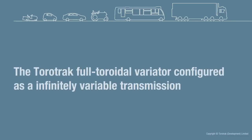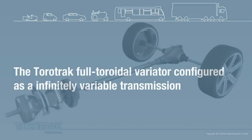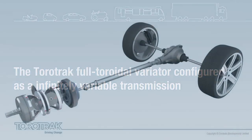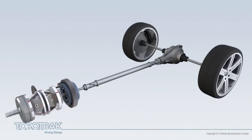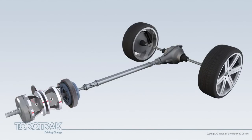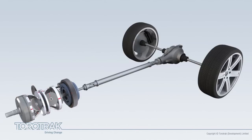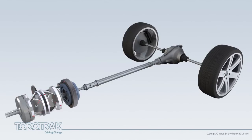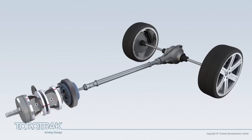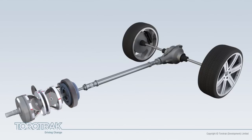The Torotrack full toroidal variator configured as an infinitely variable transmission, or IVT, delivers operation from reverse direction through neutral to maximum forward speed without discontinuity or drive interruption.